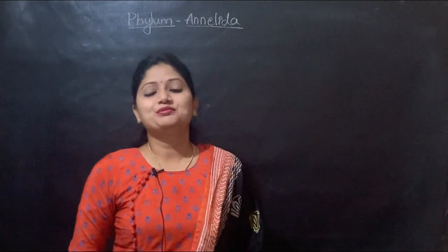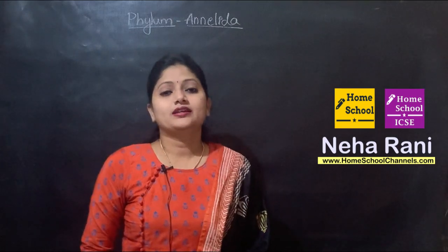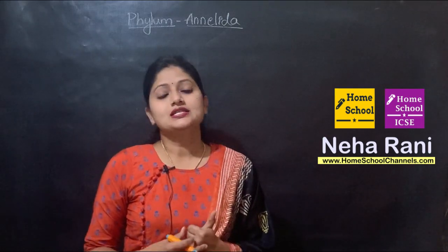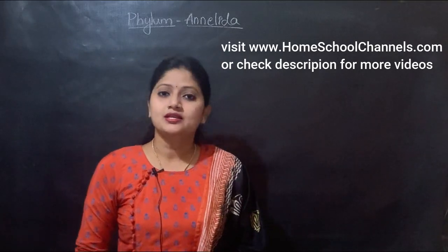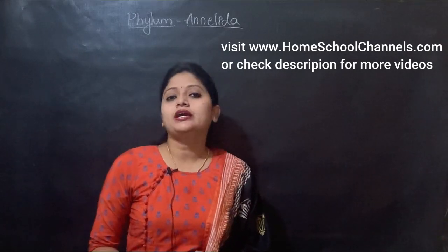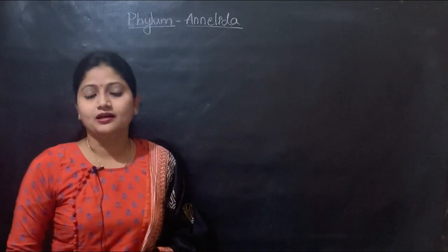Hello everyone, welcome to home school. We are in chapter 4 of class 11 biology, that is the Animal Kingdom. We have completed 5 phylums: Porifera, Coelenterata, Ctenophora, Platyhelminthes, and Aschelminthes. Today we will take up the next phylum, that is Phylum Annelida.